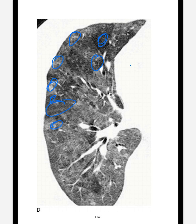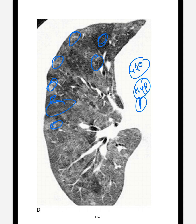This is patchy ground glass opacity with the patient presenting with two months of fever and dyspnea history. This is a case of hypersensitivity pneumonitis.